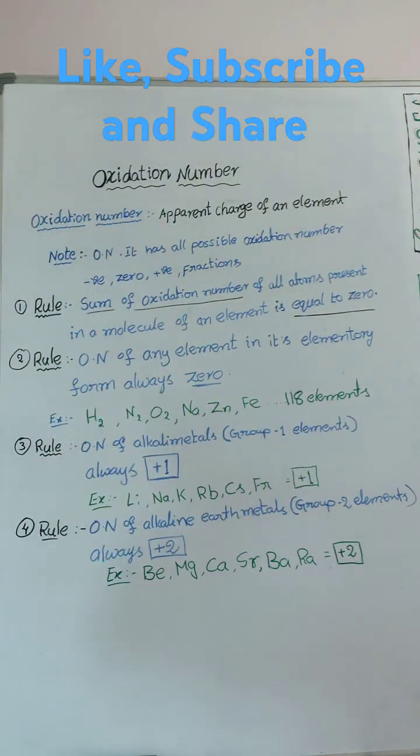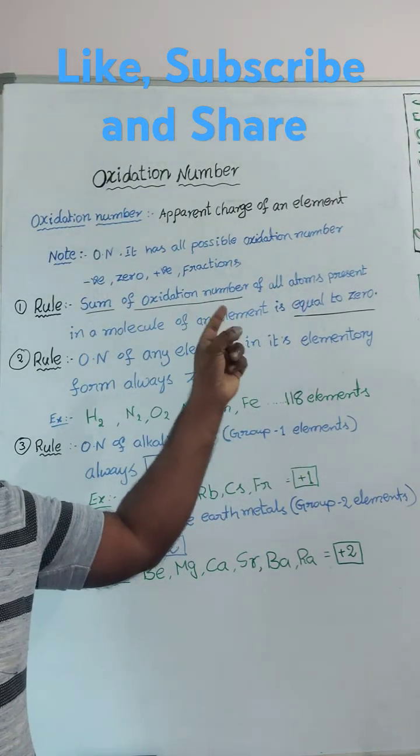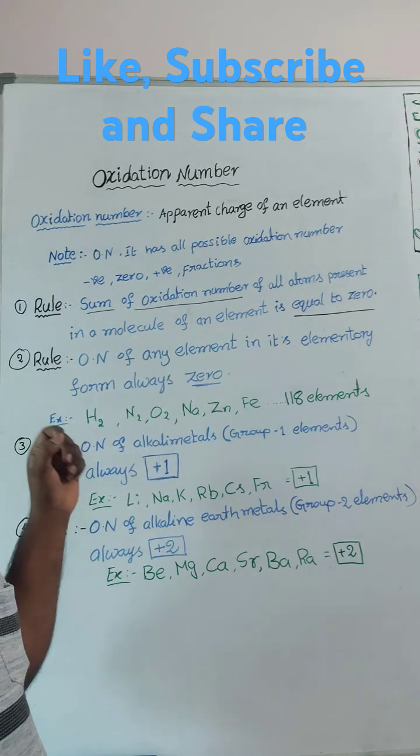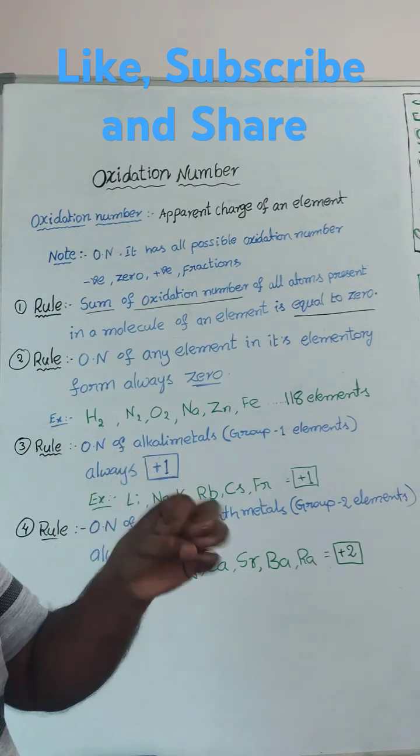Yesterday's first rule we discussed: oxidation number is sum of oxidation number of all the atoms present in a molecule is equals to 0.